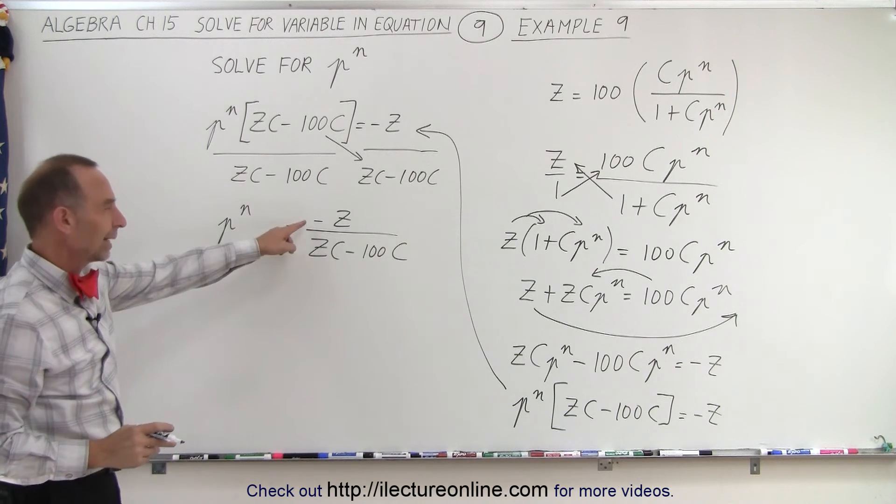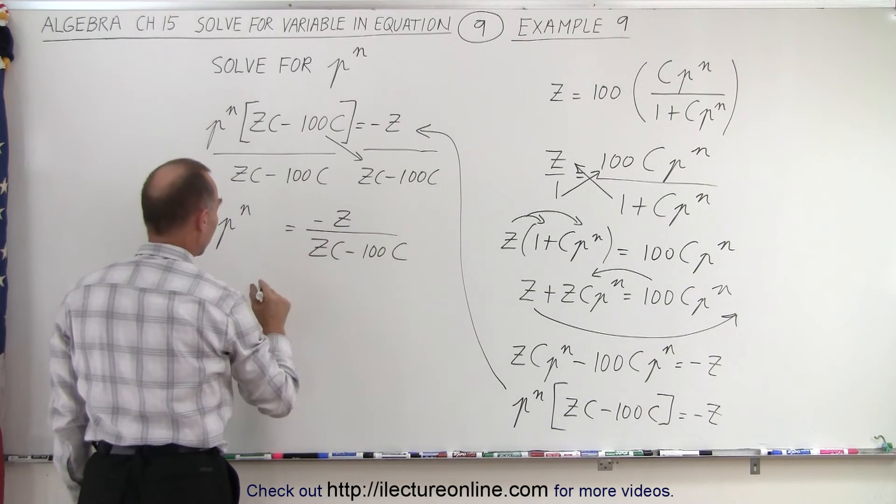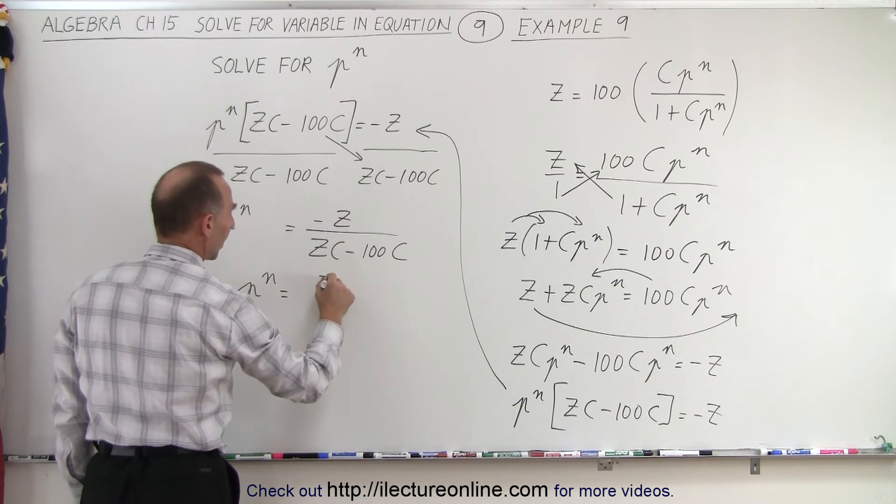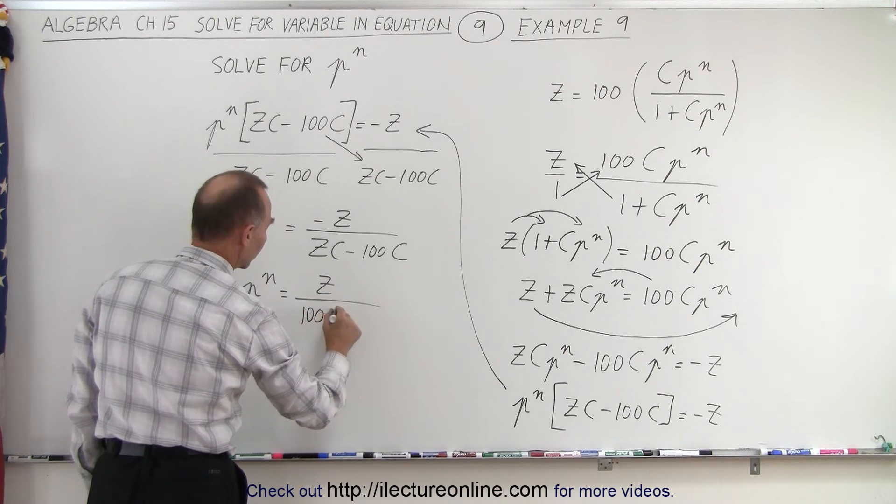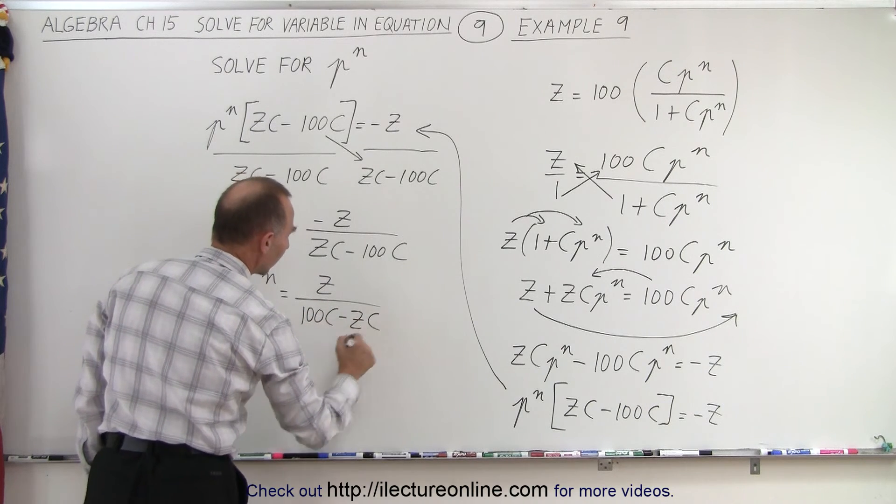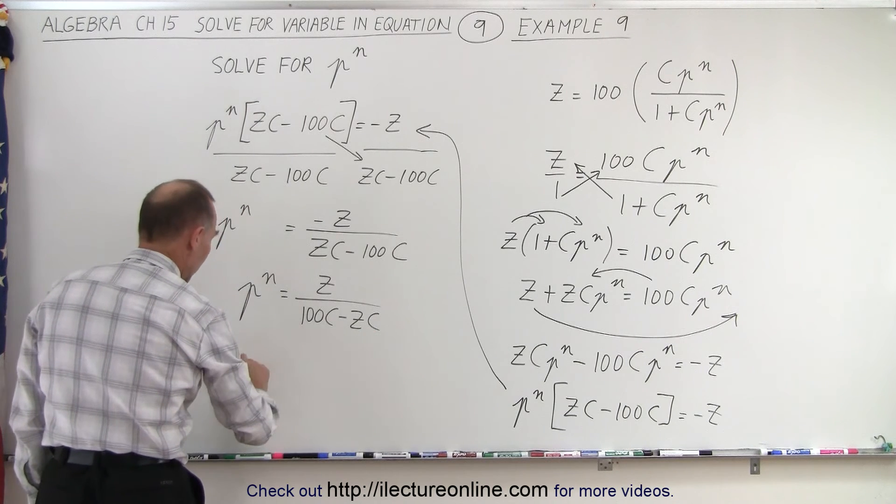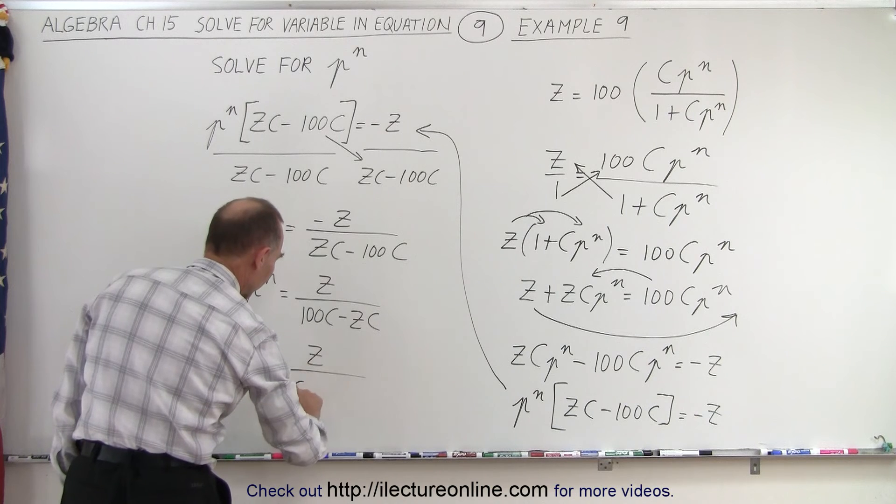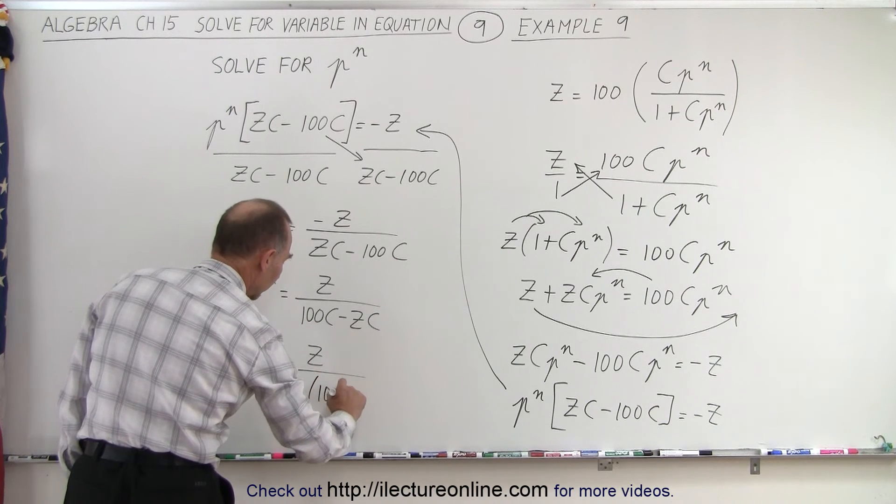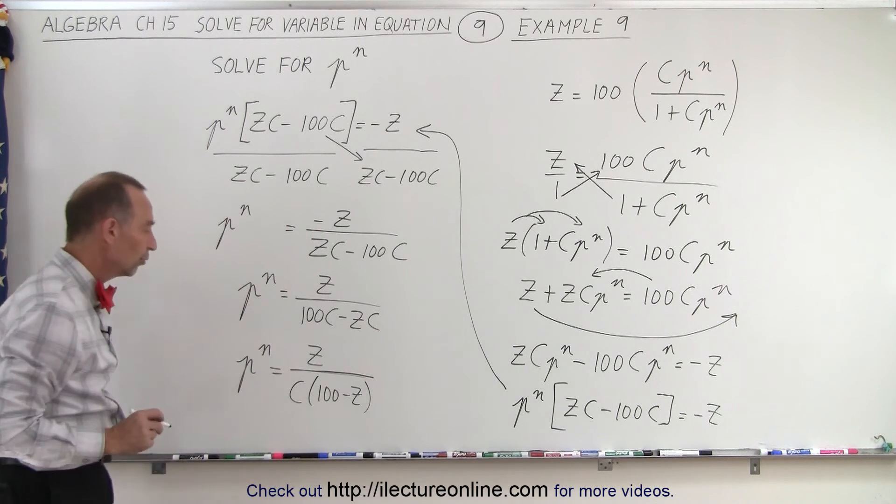And since I don't like this negative sign here, I can multiply both the top and the bottom by negative 1. And so we get p to the n is equal to a positive z divided by, and flipping these over, we get 100c minus zc. Potentially, we could factor out a c here, and we could write this as p to the n is equal to z divided by c times 100 minus z. And that might be the most simplified form.